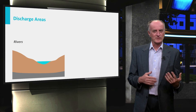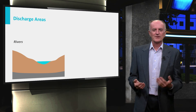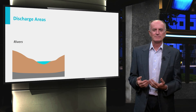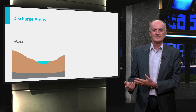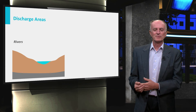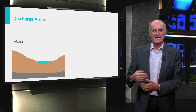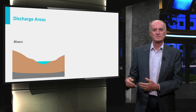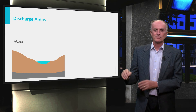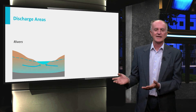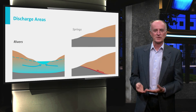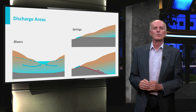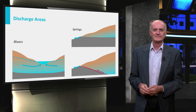To keep water flowing, the hydrological system obviously needs also discharge areas — domains where the water leaves the aquifer and goes back to the surface. Rivers and lakes are common discharge areas. Others are springs, like the ones you see in the figure.